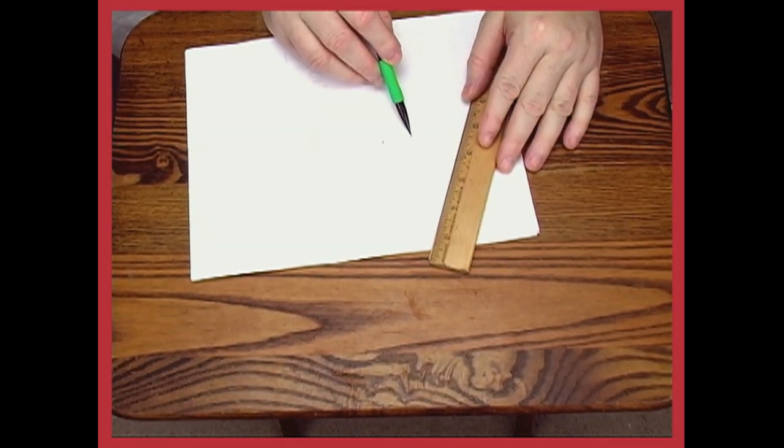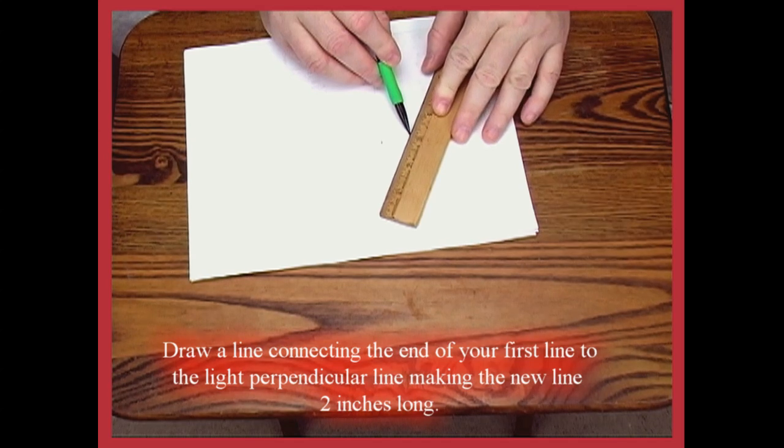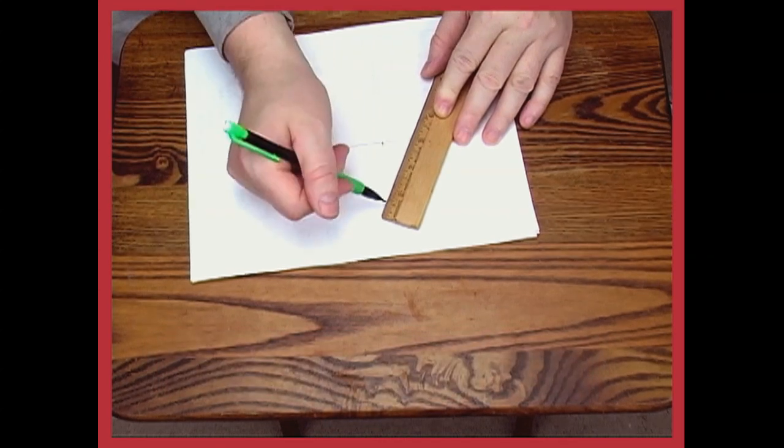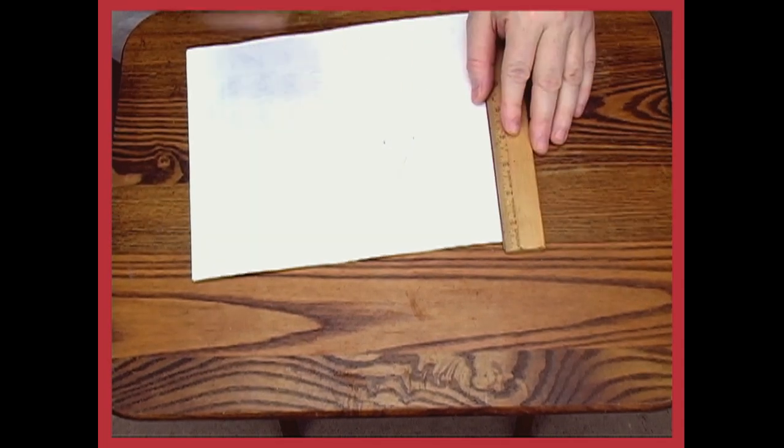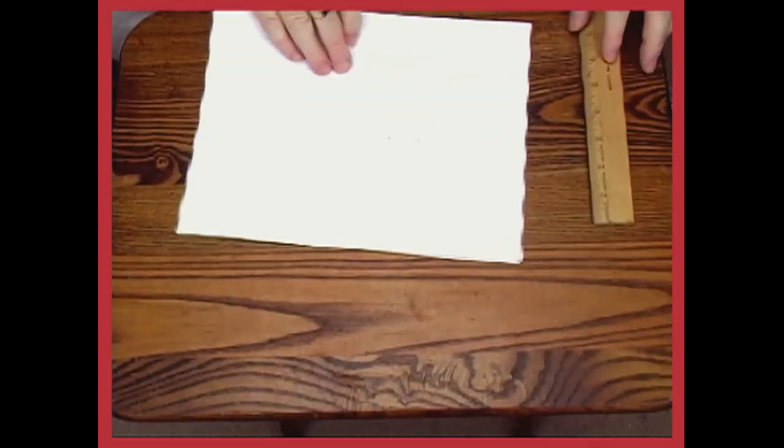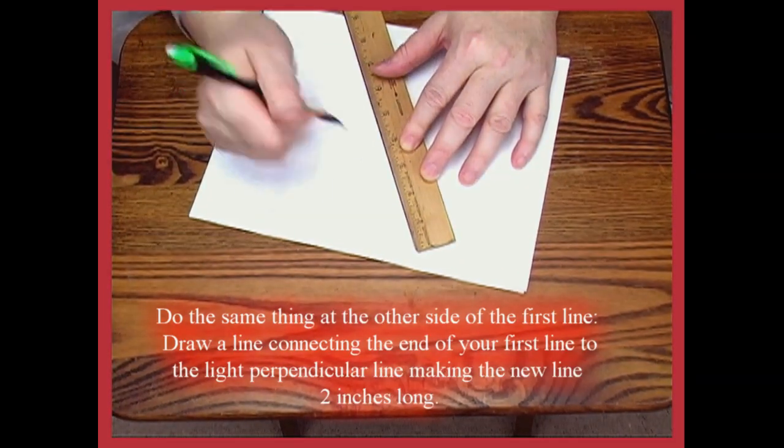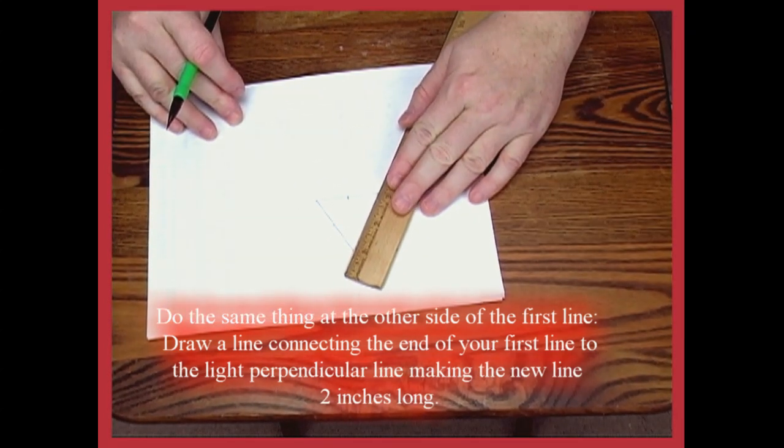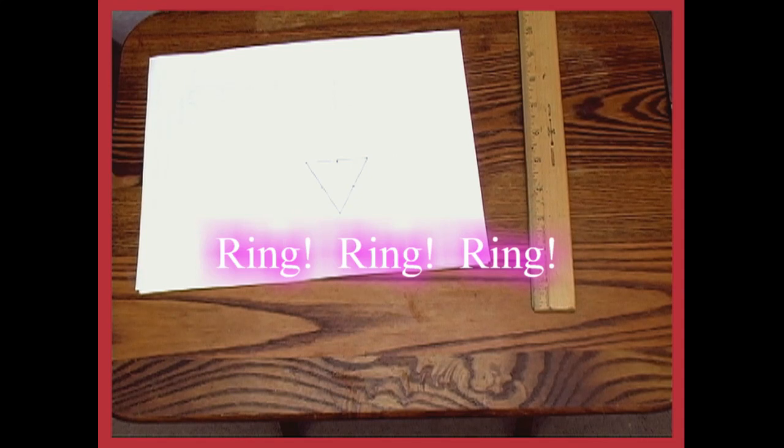That's our starter. Now, we're going to take where that mark is, and we're going to put a light perpendicular line. Try to make it as perpendicular as you can. But make it a nice light line, not very dark. And my phone's ringing.